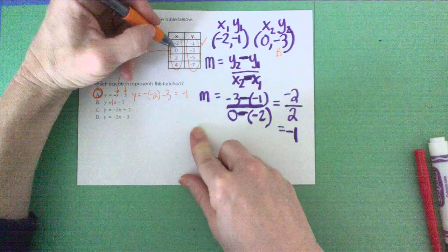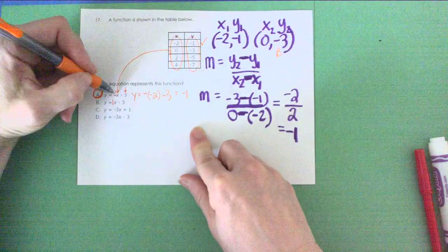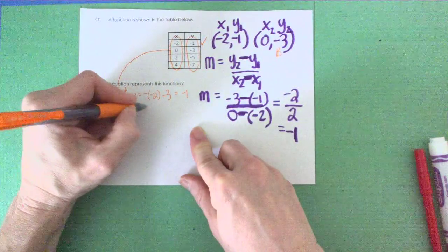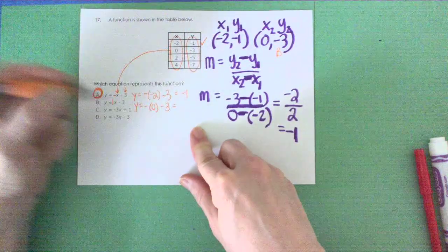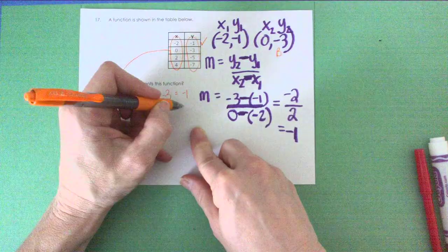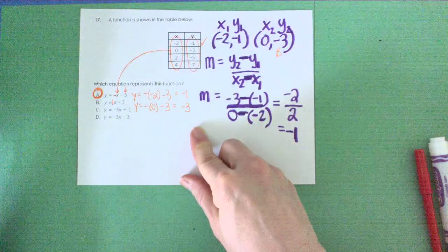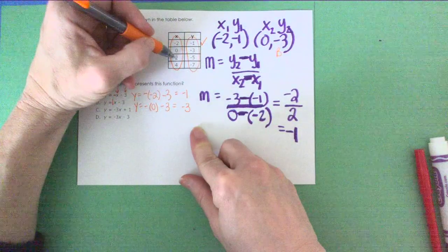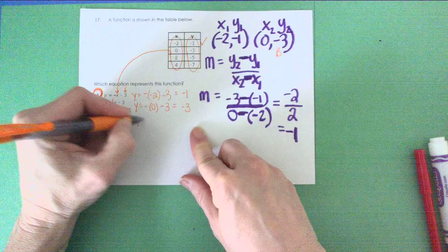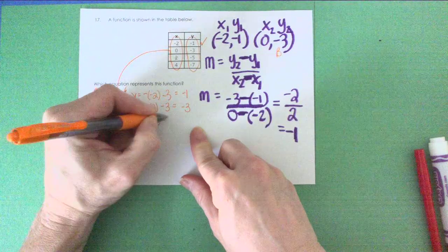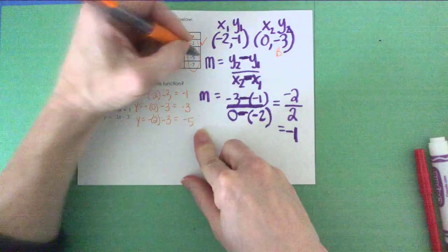If I would put 2 in, y equals the opposite of 2 minus 3. Well, that's negative 5. Check.